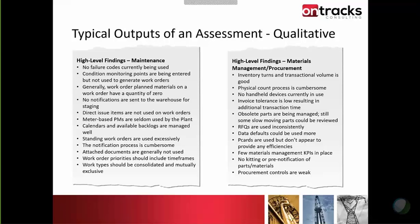They had almost no invoice tolerance — if a PO was out for $1,000 and came in at $1,010, they had to go through a complete PO revisioning process, and no one really understood why. Their obsolete parts were being managed, but slow-moving parts when you looked at the data could still be reviewed. They were using RFQs. They didn't use a lot of data defaults and were entering a lot of the same information repeatedly. There was no kitting, no controls in place. These lists change entirely based on the system review — there's a ton of qualitative findings through interviews, discussions, looking at the system, and sitting with folks.